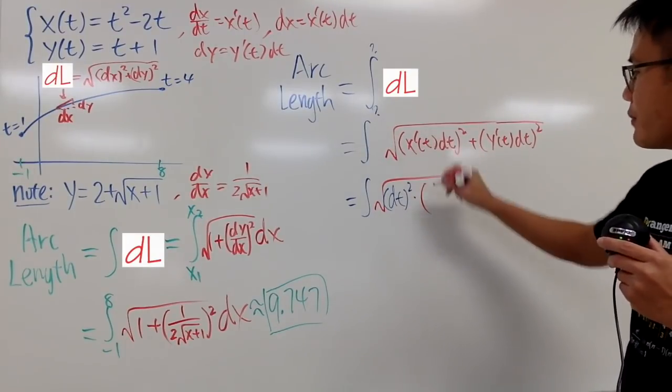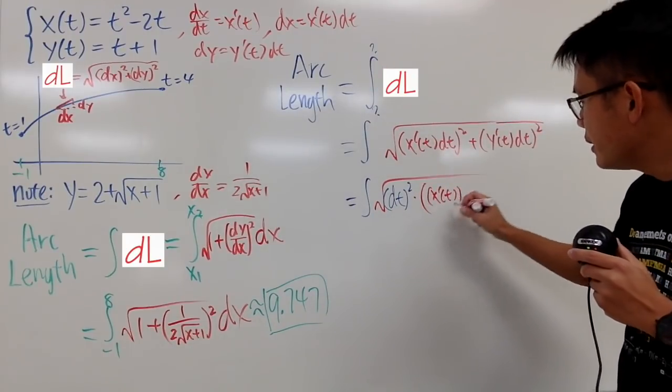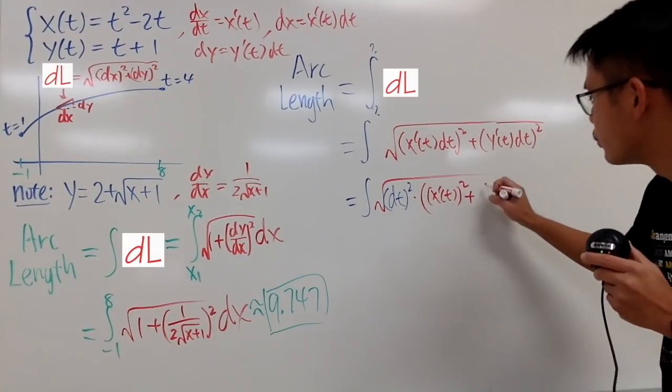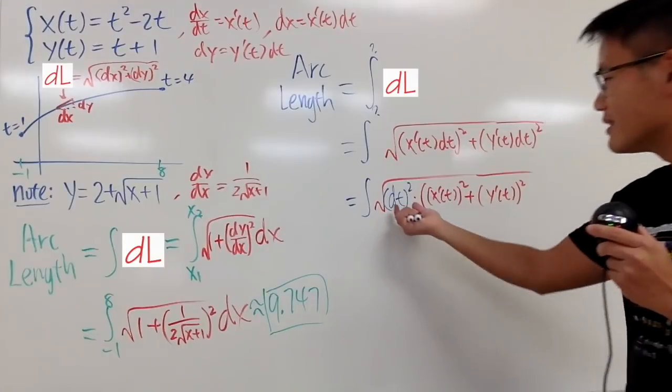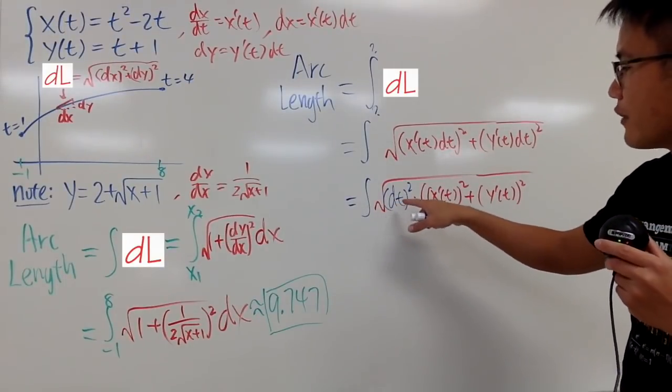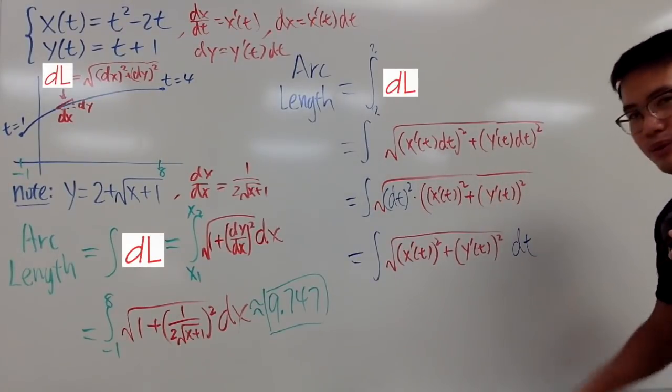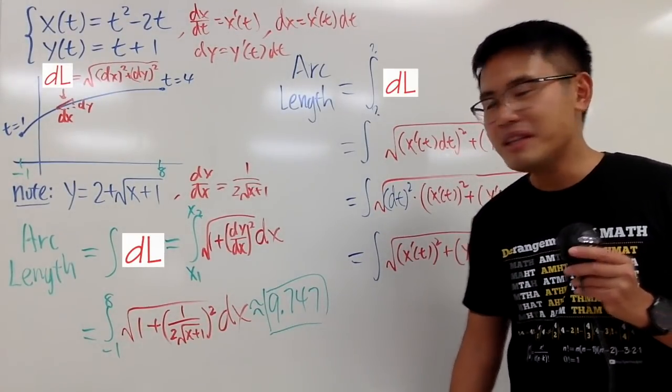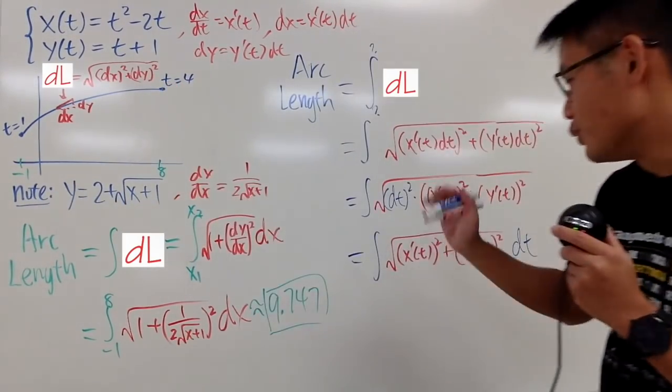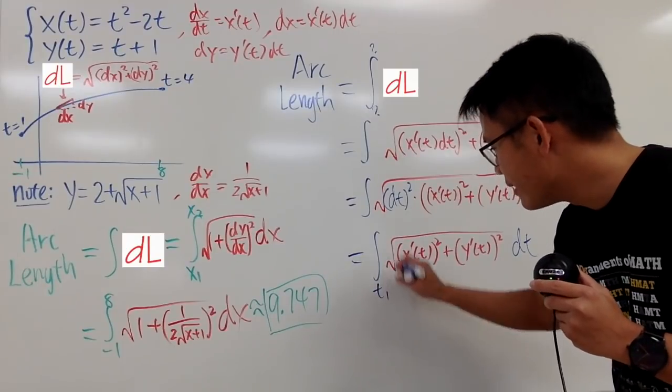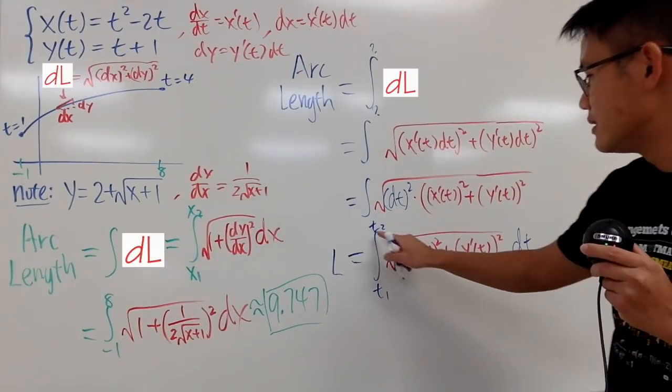And then we multiply by, first we will have x'(t) squared. So you differentiate whatever the x equation is, you put it in here and square that. And then you add this with y'(t), and you square that. Because now I can just say square root of dt squared is just the regular dt, and we can put that at the end here. Now you know this is in the t world, meaning that you have to look for the starting t value and also the ending t value. So we use t1, t2 right here. This is the arc length formula.